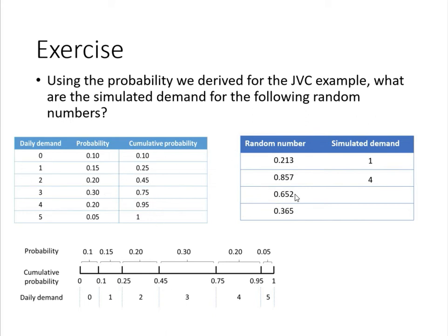Let's take this number for example. It's in between these two numbers, which means the simulated demand is going to be 3. This number is in between these two numbers, so that means the simulated demand is 2.